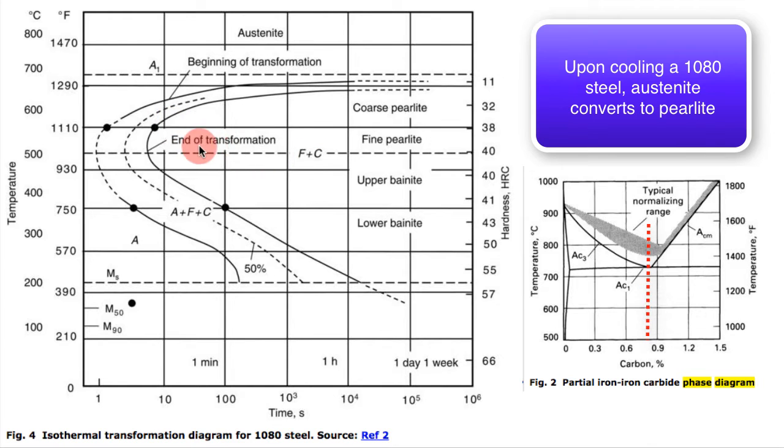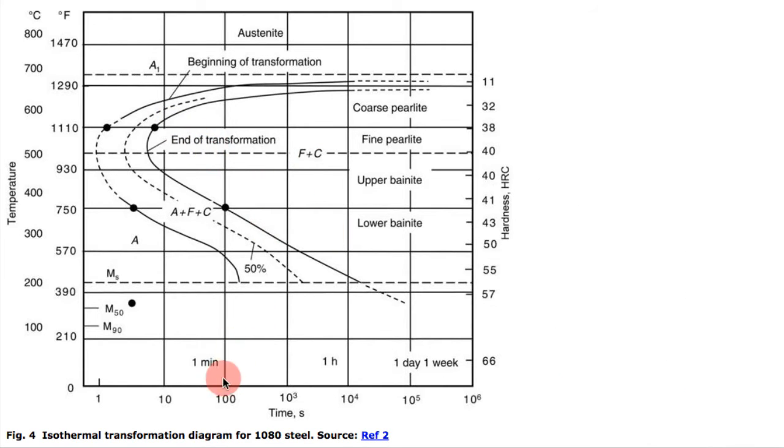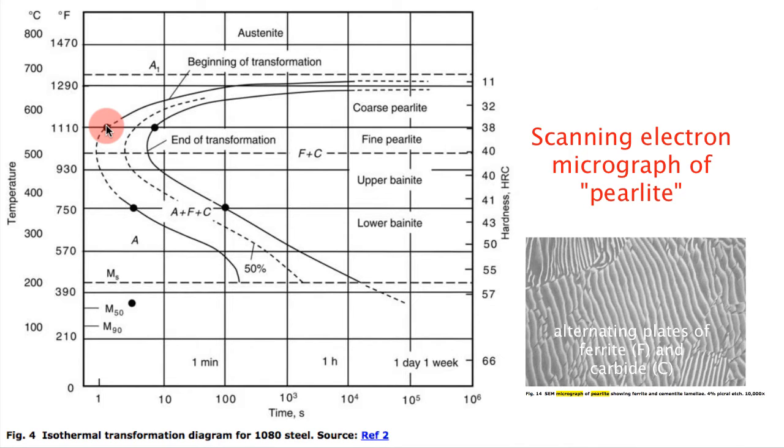What this diagram tells you is, if you started out with austenite at, let's say, 800 degrees Celsius, and you quenched it down to this temperature right here and held it, it would begin the transformation from austenite to perlite right about here, and would be halfway done right about here.